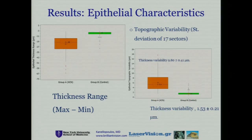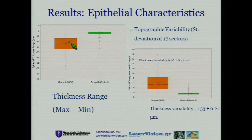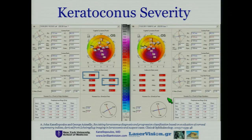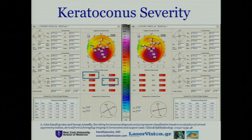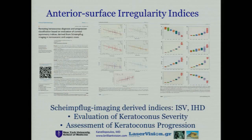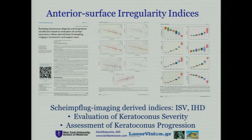Here are our results. In green are the normal eyes, and here are the keratoconic eyes — we can see the thickness rates and also the thickness variability. We also screen our patients with slit-lamp images, and test keratoconus severity with two specific indices: ISV and IHD, which correlate with the evaluation of keratoconus severity.